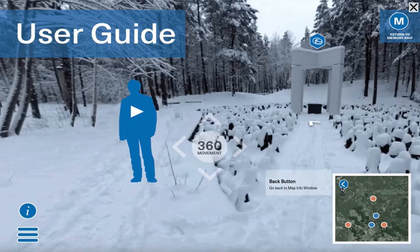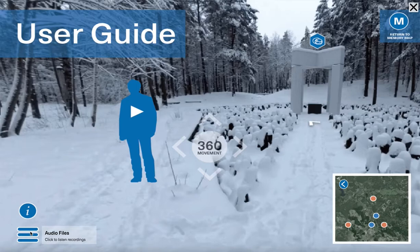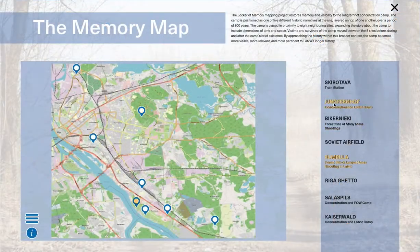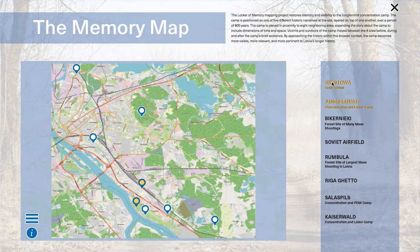If you want to go up to a higher level, you can also go back using this back button. We also have some audio files that you might want to listen to while you're walking around the site. And if you want to go back to that main map, you can always click on the Memory Map button. So this is our Memory Map, and you can see we have some text explaining why these eight sites are important for our tour.